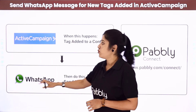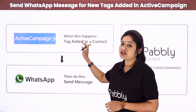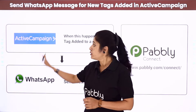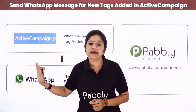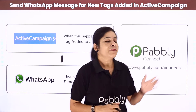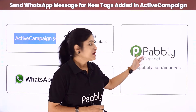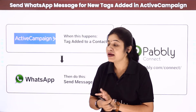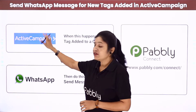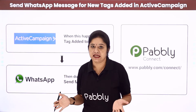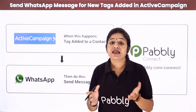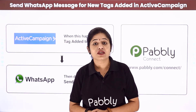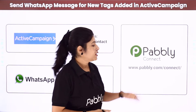For this we need to create a connection between ActiveCampaign and WhatsApp so that whenever a tag is added to a contact, the message is sent to the customer automatically. To create this connection we are going to use Pably Connect, which is an automation and integration software. The best part is it doesn't require any coding skills or programming knowledge — even a non-technical person can use it very easily.